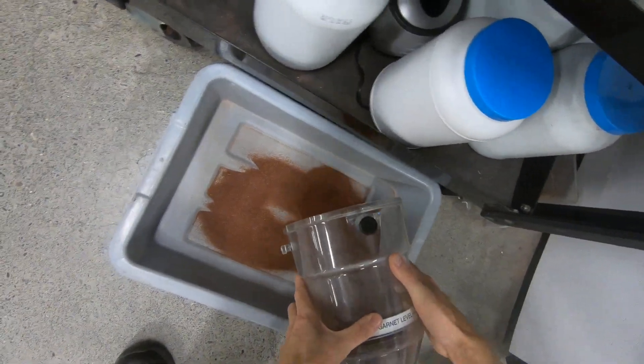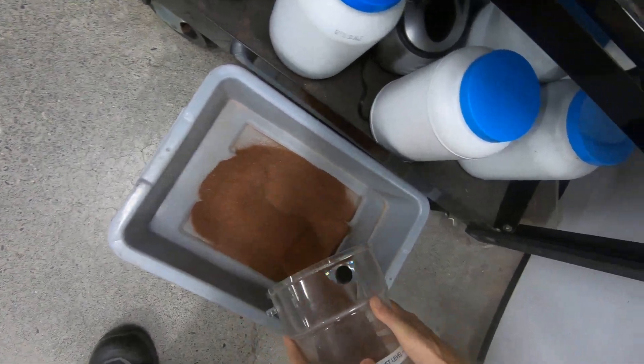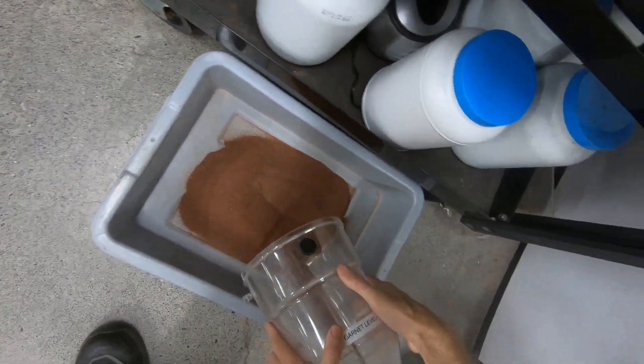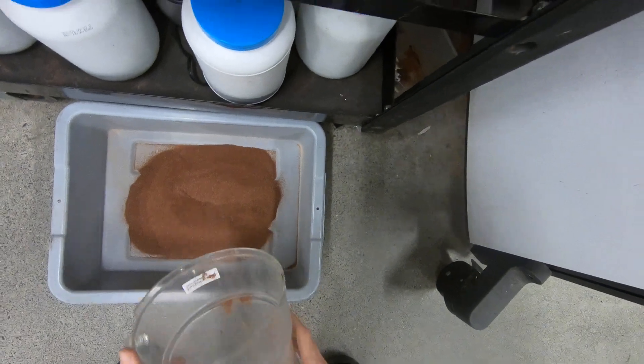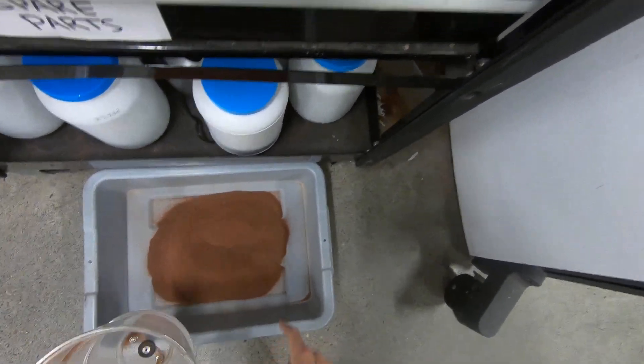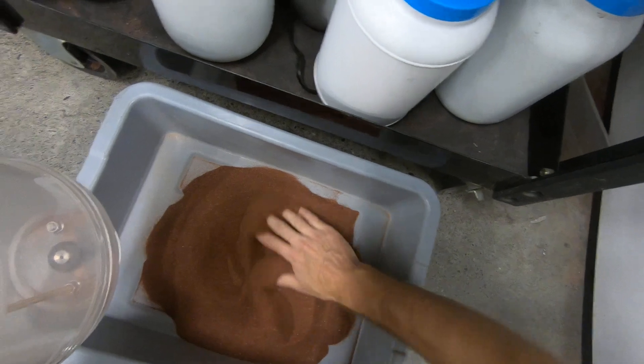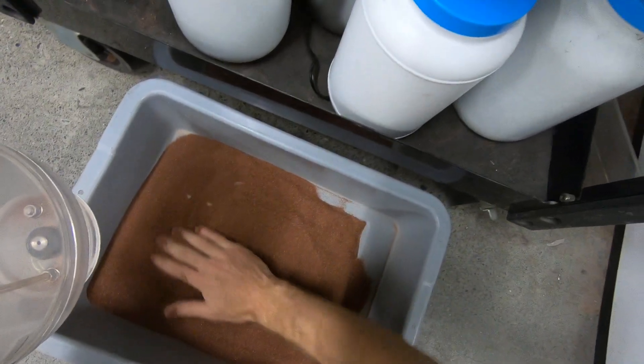When the nozzle gets clogged, it squirts water back through the abrasive tube, back into the hopper, possibly contaminating our garnet. Usually I like to look at this, make sure it's nice and dry.